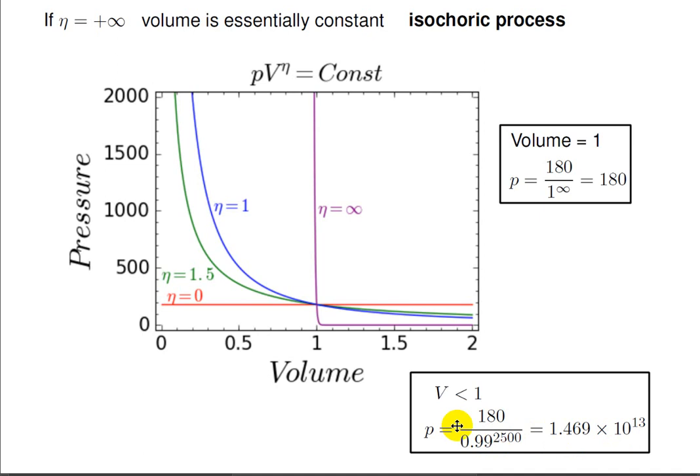As you can see in both the graph and this calculation, pressure goes straight up. Similarly, when volume tries to go above 1, the calculation of pressure goes nearly instantly to 0.